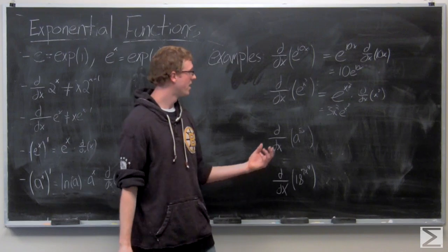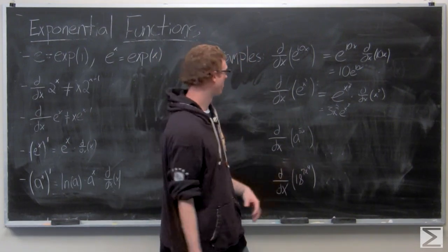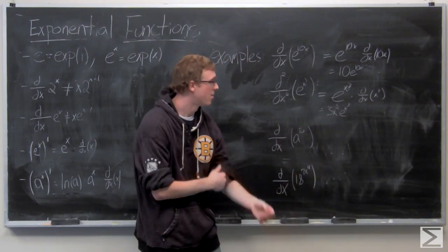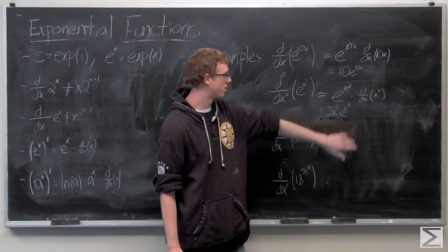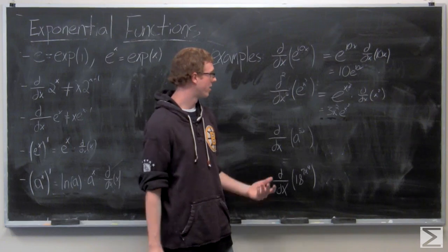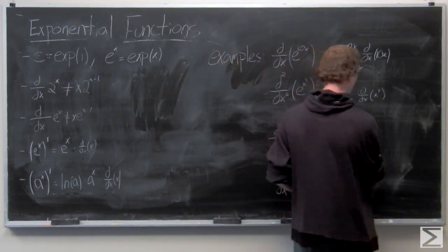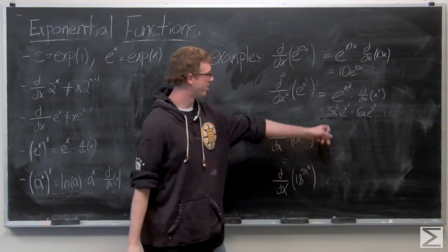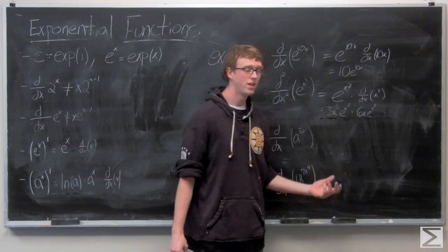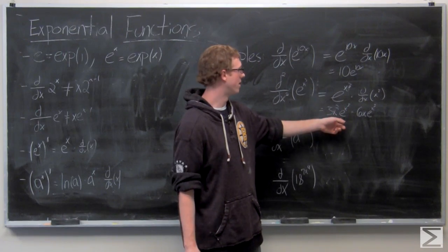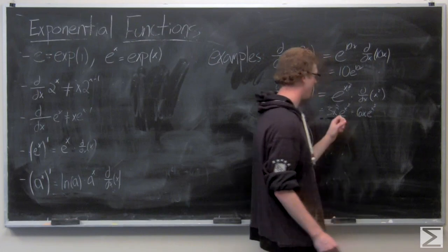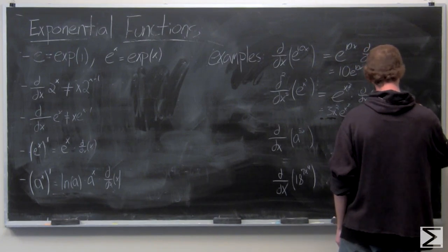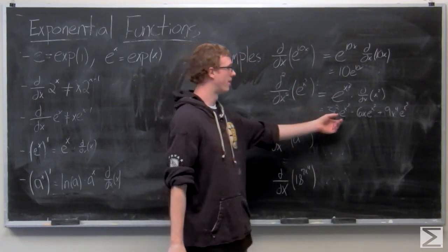Now if we wanted to calculate the second order derivative — denoted d squared over dx squared — we would need to use the product rule, because we have a term of x in front and another term of x in the exponent. So we calculate: 6x is the derivative of 3x squared, times e to the x cubed, plus 3x squared times the derivative of e to the x cubed, which we know is 3x squared e to the x cubed. So we need to square that term. That's how you calculate the second order derivative using the product rule.